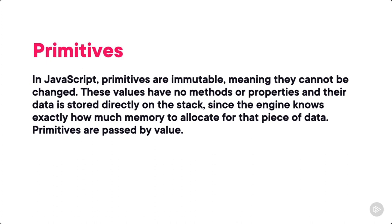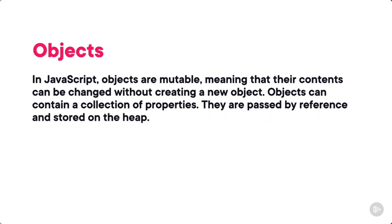Objects in JavaScript are mutable — their contents can be changed without creating a new object. Objects can contain a collection of properties, are passed by reference, and are stored not on the stack but on the heap. Let's look at the different data types in these two categories. For primitives, we have: Boolean values (true/false), number, BigInt (big integer), string — and it's important to note that in JavaScript, string is a primitive, which is different from many other languages — and also symbol, null, and undefined.